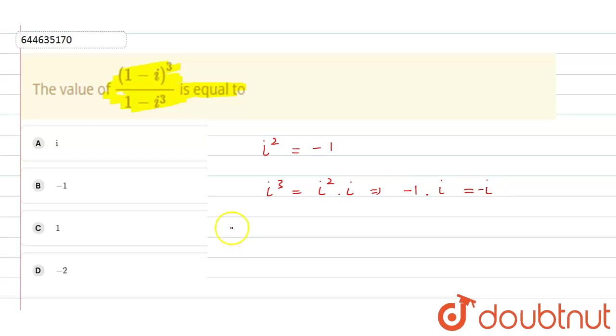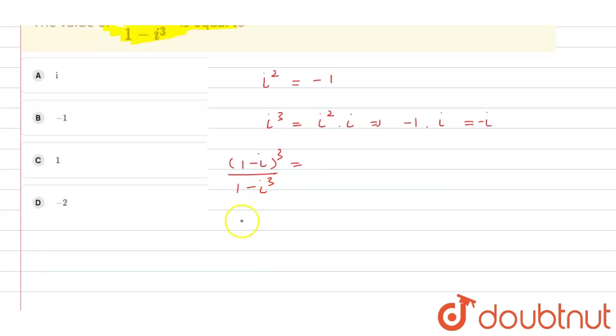Now we have to find the value of (1 minus iota) whole cube divided by (1 minus iota cube). We know that (a minus b) cube is equal to a cube minus b cube minus 3a square b plus 3ab square.